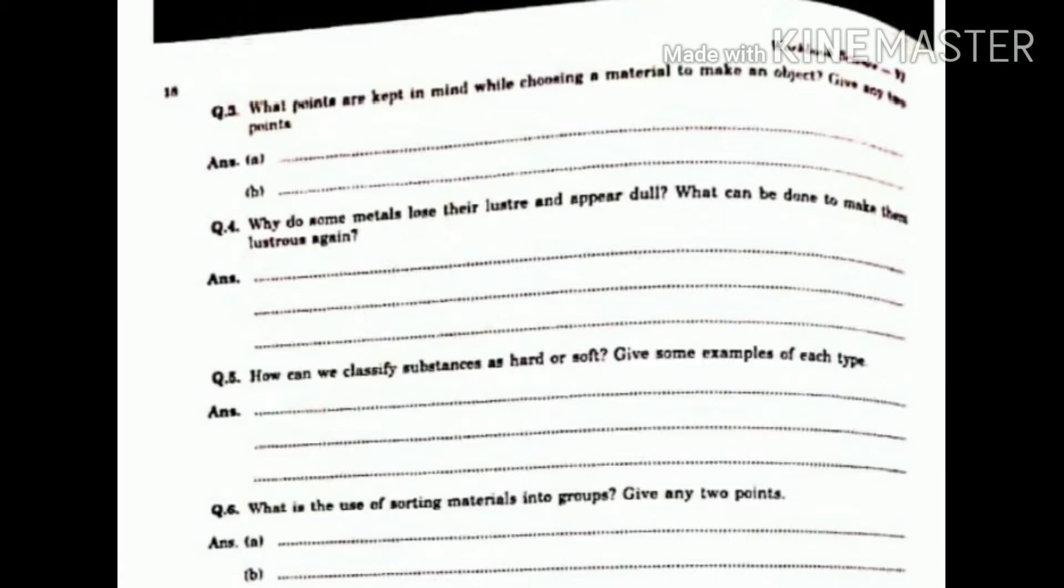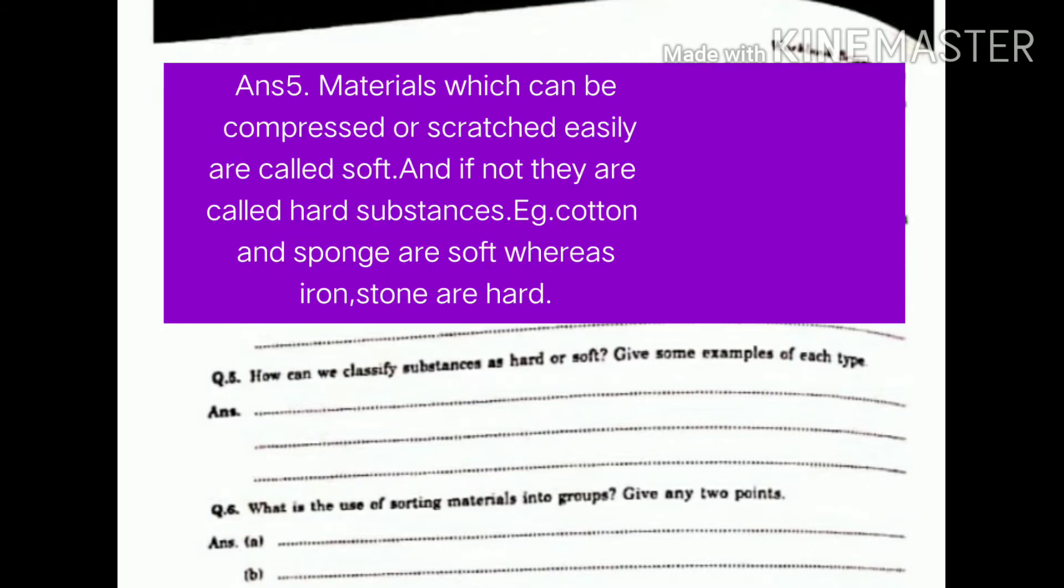Question number 5. How can we classify substances as hard or soft? Give some examples of each type. Answer. Materials which can be compressed or scratched easily are called soft and if not, they are called hard substances. Example. Cotton or sponge are soft while iron and stone are hard.